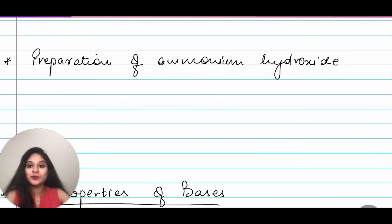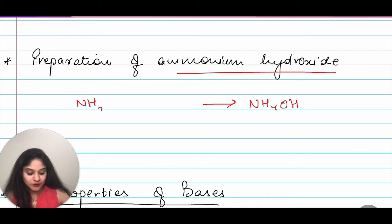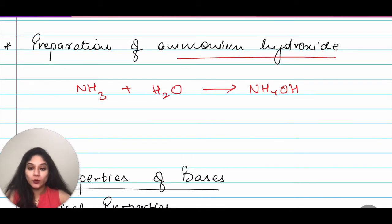Now, moving on to preparation of ammonium hydroxide. This is the last preparation reaction of bases and this is the most easiest one of all. Ammonium hydroxide that is NH4OH. You will have ammonia gas NH3 plus water which will give us NH4OH. I hope this much makes sense.